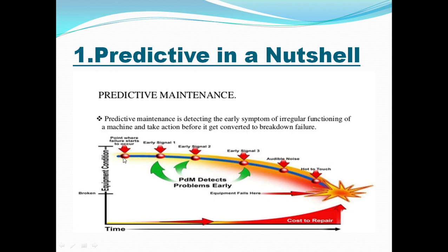Now see — suppose this is the first point where failure starts. It gives some knocking sound. If you notice and look at this graph, this is the time it will take to repair the machine at this stage, and this is the cost involved. Similarly, a second signal means we are going to spend this much time attending to the failure. Here is the preliminary stage where we can rectify it. A third or fourth signal gives some audible noise.